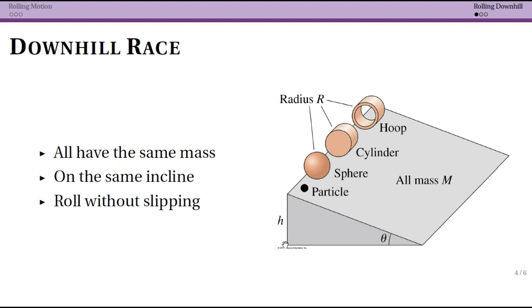So they start a height h up, we've defined the length of this, and you have some theta. Now they all roll without slipping. And the question is, which of these four objects get to the bottom first?